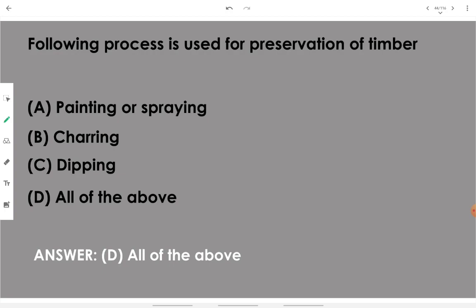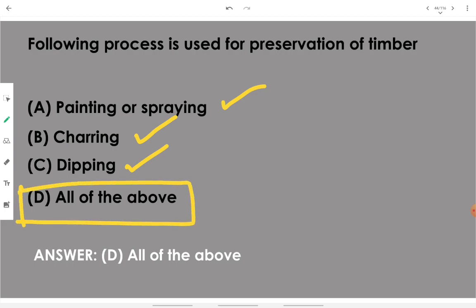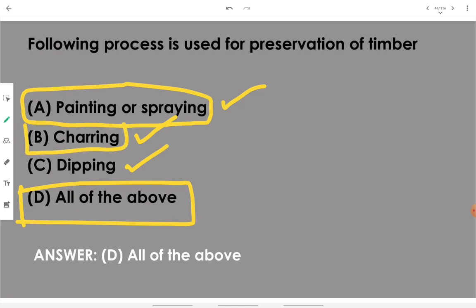The following processes are used for preservation of timber: painting or spraying, charring, and dipping — all of the above. We can paint or spray the timber with anti-moisture or moisture-proof paint. Charring means slightly burning the upper surfaces so they convert to carbon, which then prevents insect attack. We can also dip the timber in a specific chemical or paint, which adds to the life of the timber. All of the above options are correct.